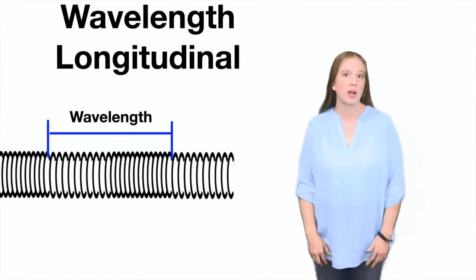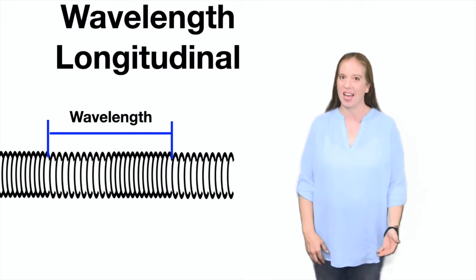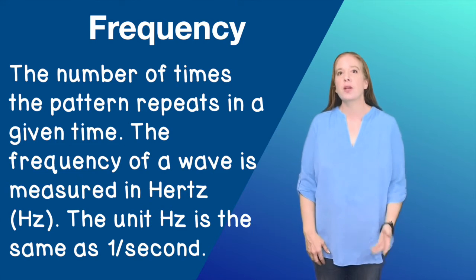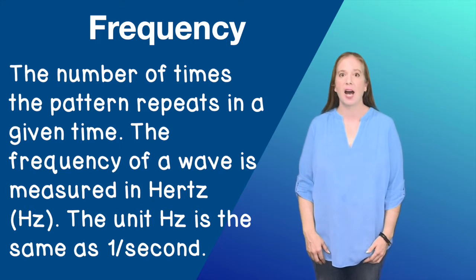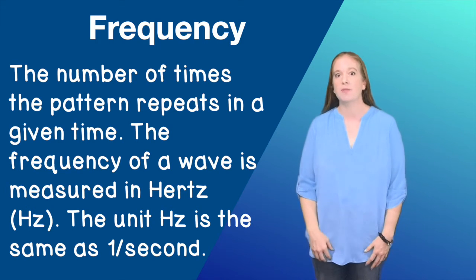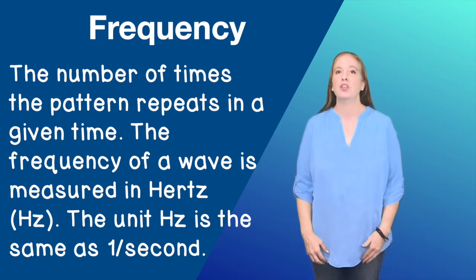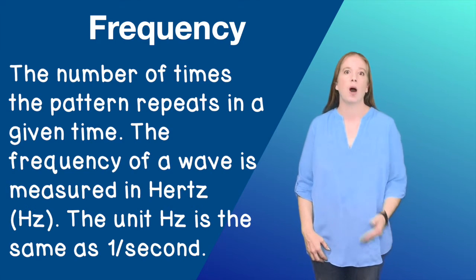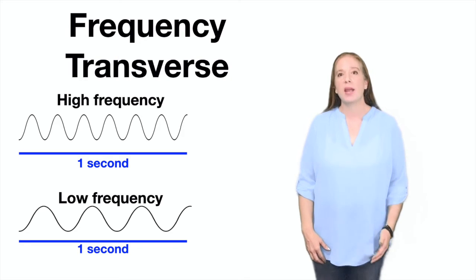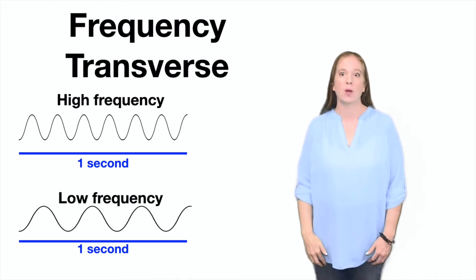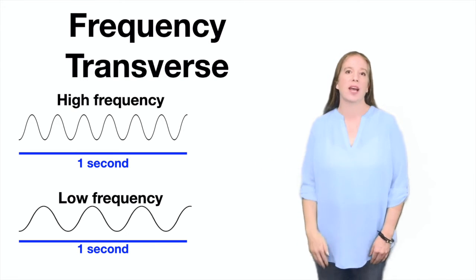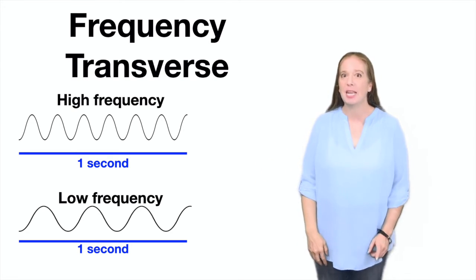The frequency of a wave is the number of times the pattern repeats in a given time. The frequency of a wave is measured in hertz. The unit hertz is the same as one per second. The more waves in a given time, the higher the frequency it has. The top wave here has 6.5 waves in one second, and the bottom one has 3.5 waves in the same second.